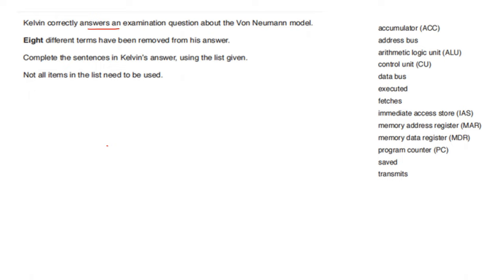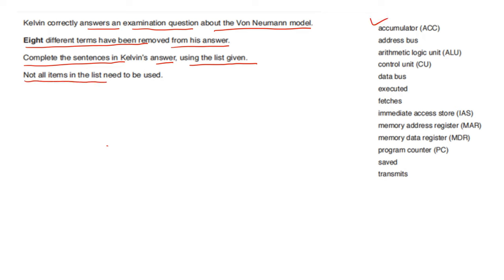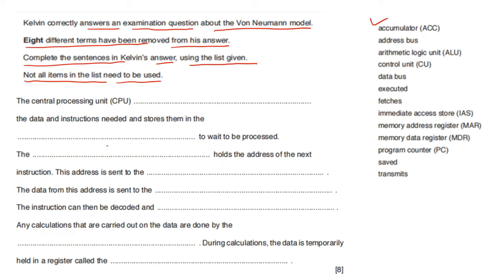Kelvin correctly answered an examination question about the von Neumann model; eight different terms have been removed. Complete the sentences using the list given. The central processing unit (CPU) fetches the data and instructions needed and stores them in the immediate access store (IAS) to wait to be processed. The program counter (PC) holds the address of the next instruction. The address is sent to MAR (memory address register).